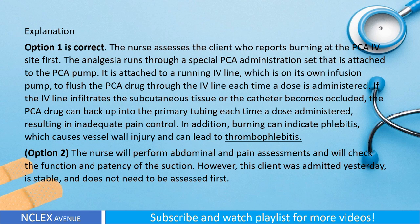Explanation: Option one is correct. The nurse assesses the client who reports burning at the PCA site first. The analgesia runs through a special PCA administration set attached to the PCA pump, connected to a running IV line on its own infusion pump to flush the PCA drug through each time a dose is administered. If the IV line infiltrates the subcutaneous tissue or the catheter becomes occluded, the PCA drug can back up into the primary tubing, resulting in inadequate pain control. Additionally, burning can indicate phlebitis, which causes vessel wall injury and can lead to thrombophlebitis.